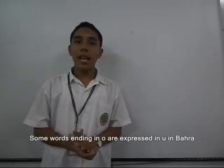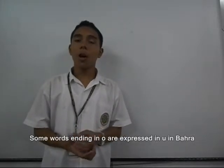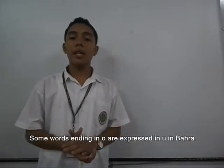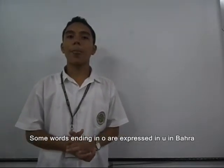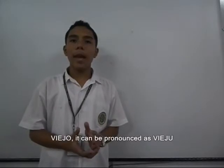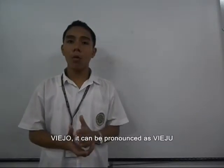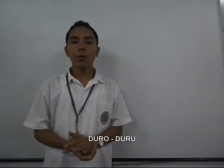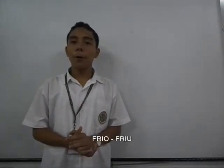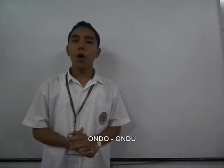Some words ending in O are expressed as U in Bara. Examples: Viejo becomes Viejo, Duro becomes Duro, Rico becomes Rico, Frio becomes Frio, Hondo becomes Hondu, and Ques becomes Queso.